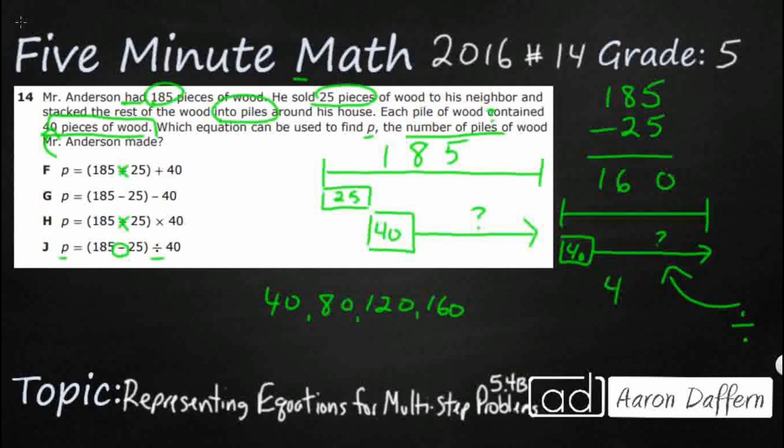I'm thinking my answer is J. But notice it never asked us for the actual answer p — it just wants the equation for p. I know there are going to be four piles. If I take away 25 and then divide 160 by 40, there's going to be four 40s. Let's see if p equals four works, and if any of the others also work for four.